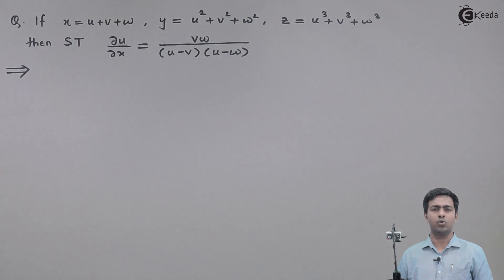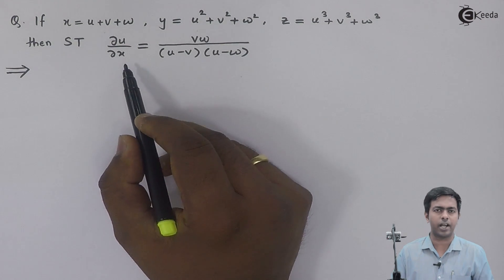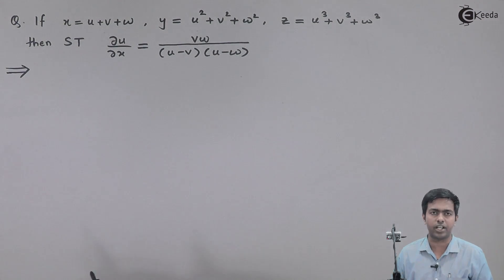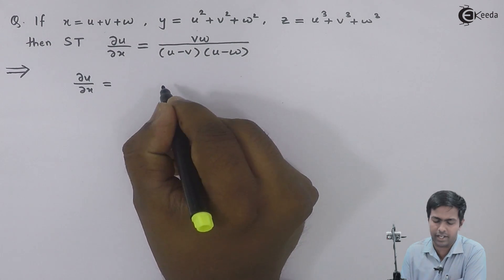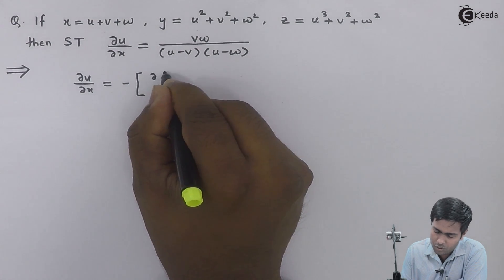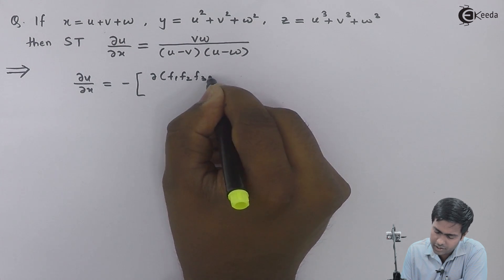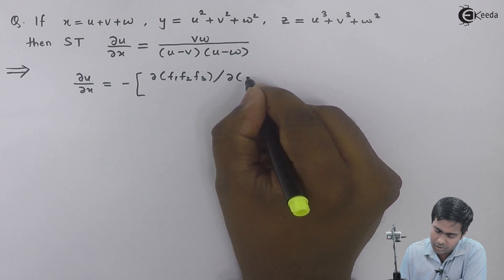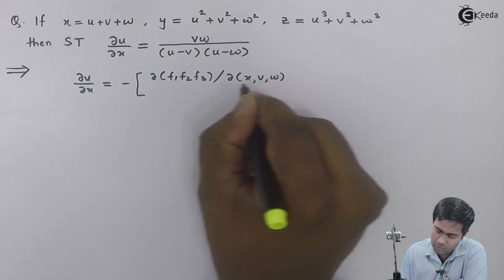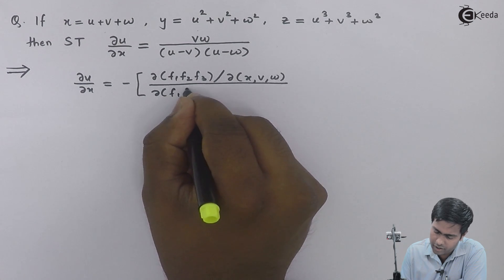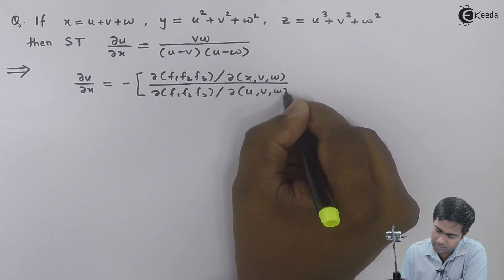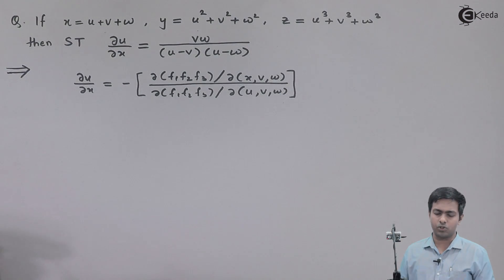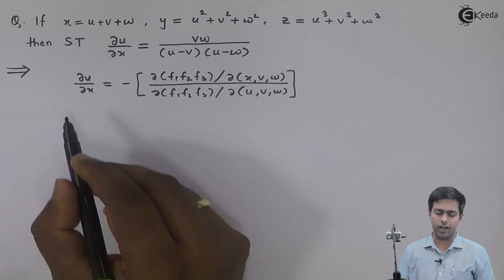So here we'll make use of partial derivatives using Jacobians so that we'll get the value of dou u by dou x, even if u is not given in terms of x. To find dou u by dou x using Jacobians, the formula is minus of dou(f1, f2, f3) with respect to (x, v, w) divided by dou(f1, f2, f3) with respect to (u, v, w). We are going to use this formula to find the value of dou u by dou x.